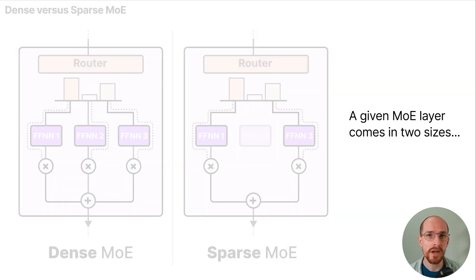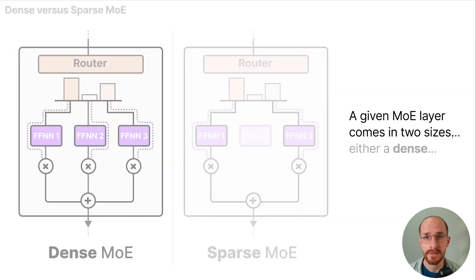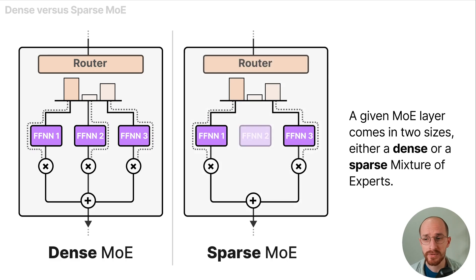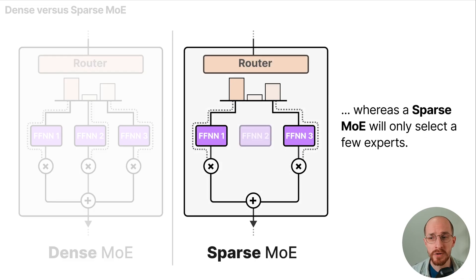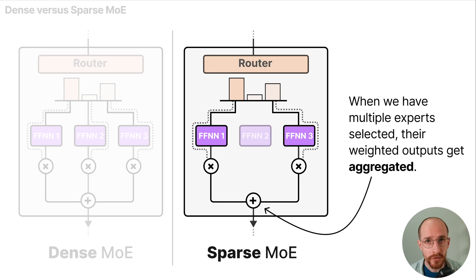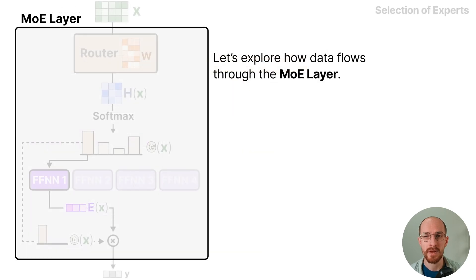A given MoE layer comes in two sizes either a dense or a sparse mixture of experts. A dense mixture of experts will distribute the tokens across all experts whereas a sparse MoE will only select a few experts. When we have multiple experts selected their weighted outputs get aggregated. Let's explore how data flows through the MoE layer.